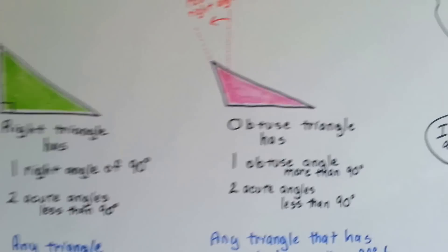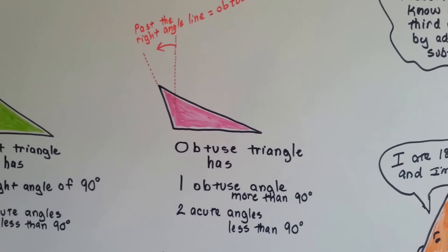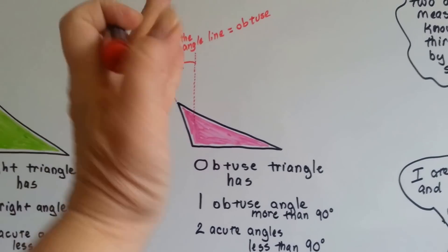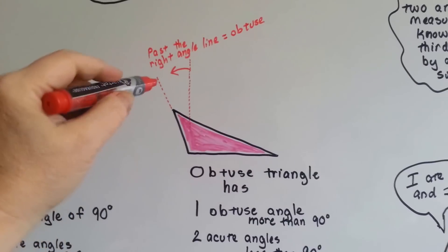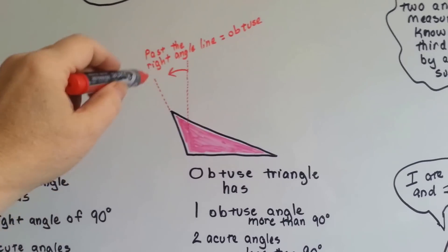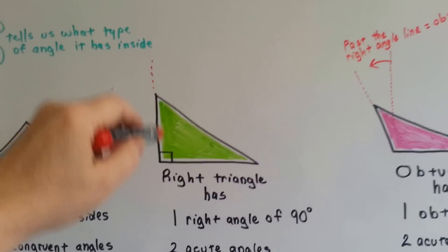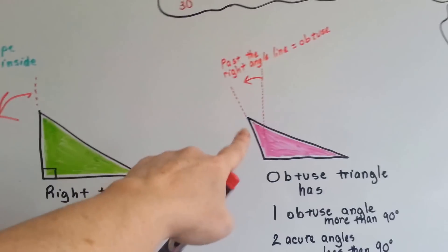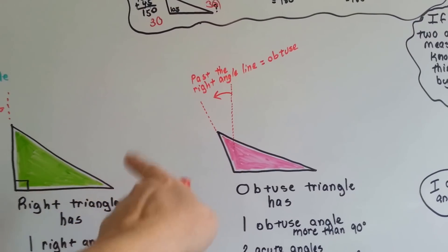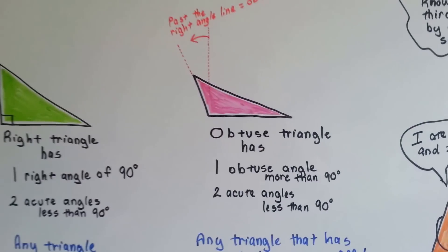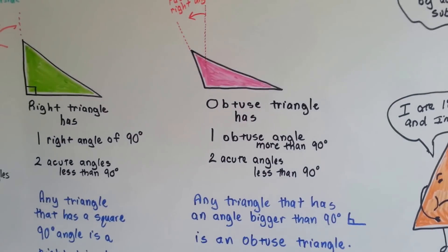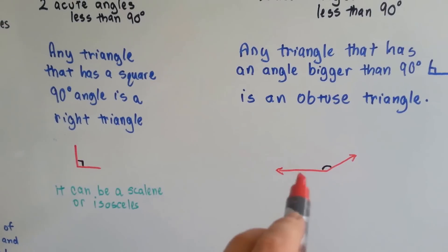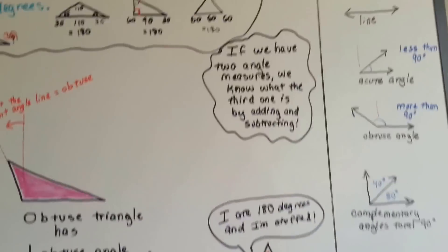An obtuse triangle has one obtuse angle that's more than 90 degrees. Here's our 90-degree angle line. If you went straight up and down and made that 90-degree box, the obtuse angle goes past that line. Here's the right triangle line — it goes past it this way. Any triangle that has an angle bigger than 90 degrees is an obtuse triangle. The angle is open really big.